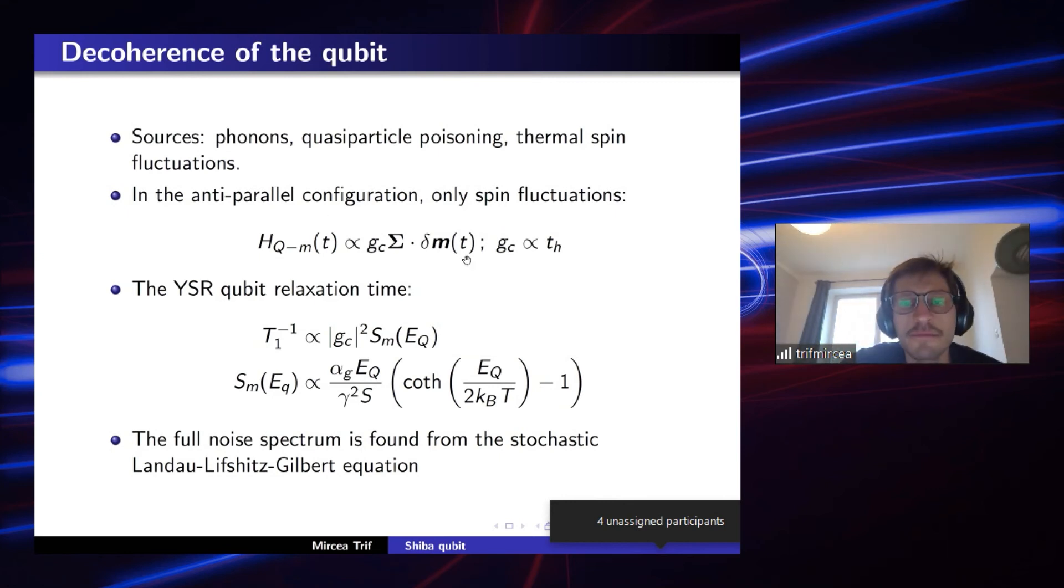it turns out that in the anti-parallel configuration, the main effect stems from fluctuations in the magnetic moment. And what we find is that the coupling to this fluctuation magnetic moment is nothing but t_h, the tunneling between the two impurities. So once that is known, one can go ahead and put down a rate equation in order to find the coherence of this YSR qubit. And what we find is that the T1, which is the relaxation time of the qubit, is proportional to this g_c, that is t_h squared, and the noise spectrum of the spin fluctuations that are found to be proportional to basically the Gilbert damping. So there is some fluctuation and dissipation theory that imposes this kind of behavior for the noise from the magnetic moment.